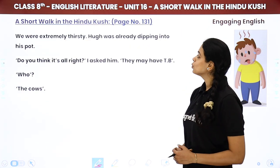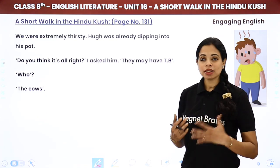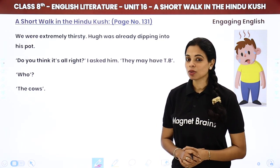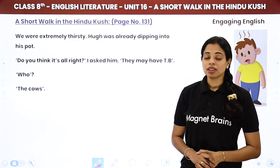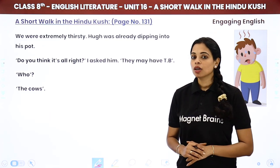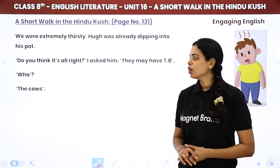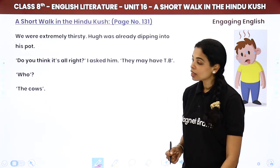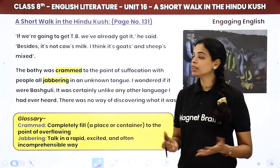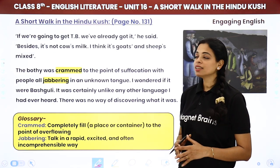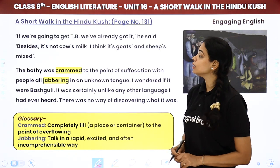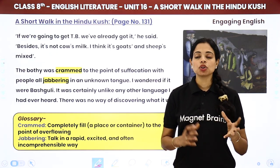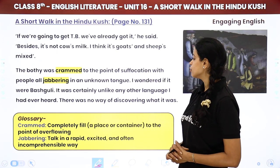We were extremely thirsty. Hugh was already dipping into his pot. I asked him, 'Do you think it's all right? They may have TB.' He said, 'If we were going to get TB, we have already got it. Besides, it's not cow's milk — I think it's goat's and sheep's mixed.' The bodhi was crammed to the point of suffocation with people, all jabbering in an unknown tongue. 'Jabbering' means talking very rapidly in a confused way — and since it was an unknown language, it was complete noise to us.